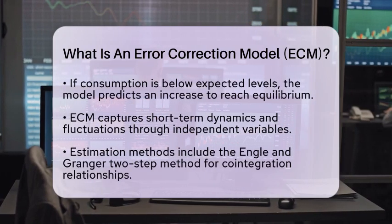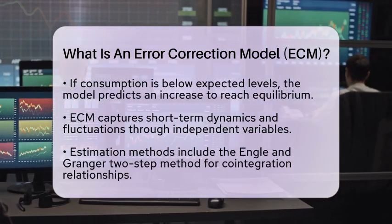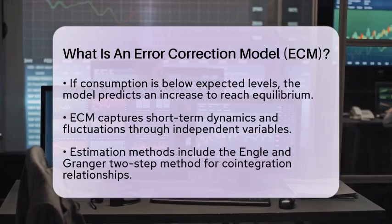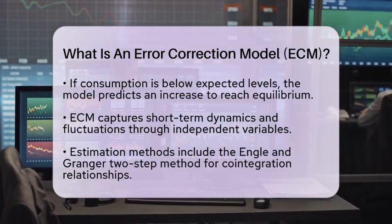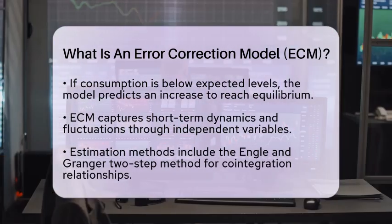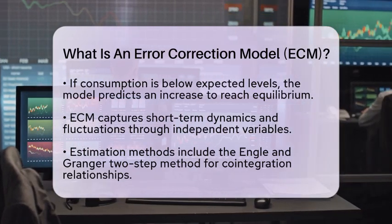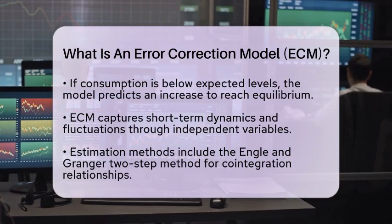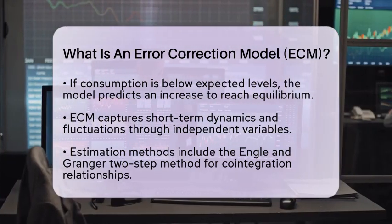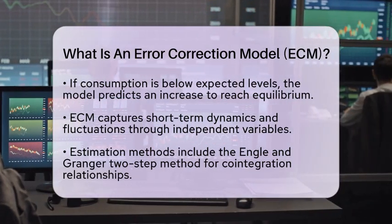When it comes to estimating Error Correction models, there are several methods available. One common approach is the Engle and Granger two-step method. This involves first estimating the cointegration relationship using a regression in levels, then using this relationship in a model that considers short-term dynamics. Another method is the Johansen approach, which allows for multiple cointegrating relationships and is more flexible, especially when dealing with several variables.